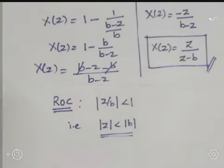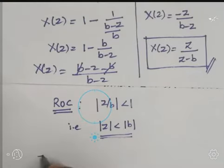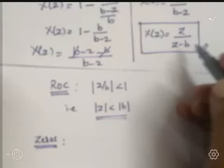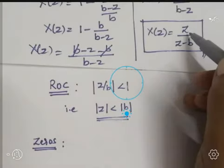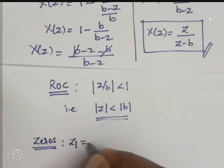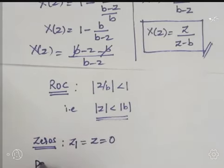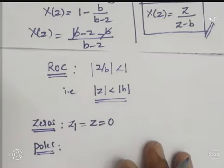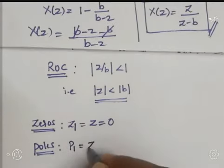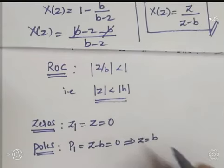Next, let us calculate the poles and zeros. Equating the numerator polynomial to zero: Z = 0, so one zero is present at the origin. Equating the denominator to zero: Z − B = 0, giving Z = B, so one pole is present at point B on the Z-plane.